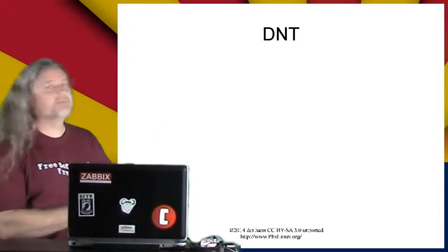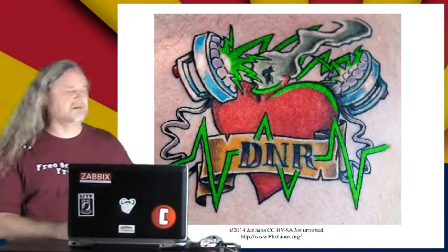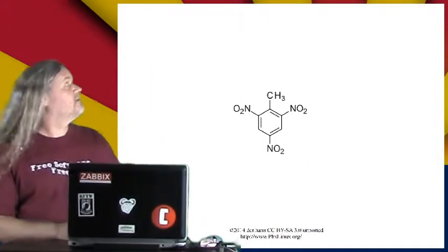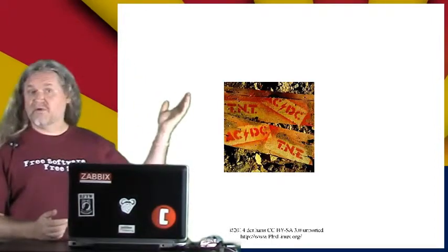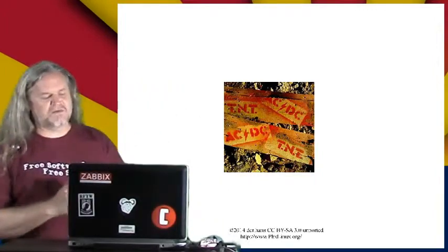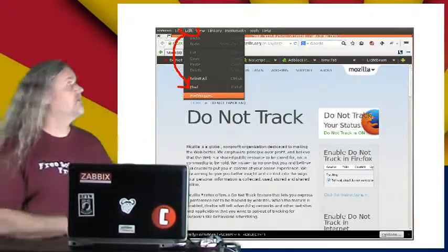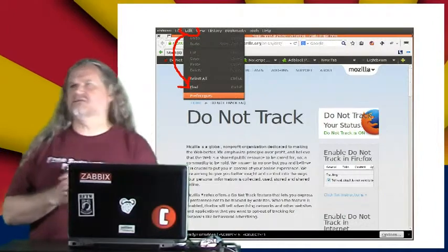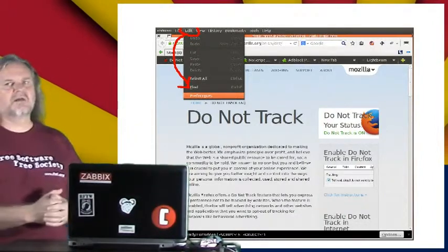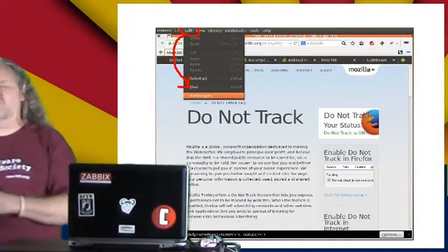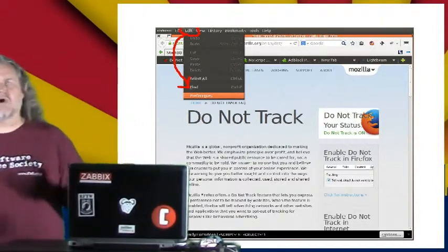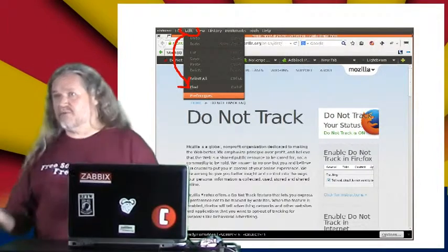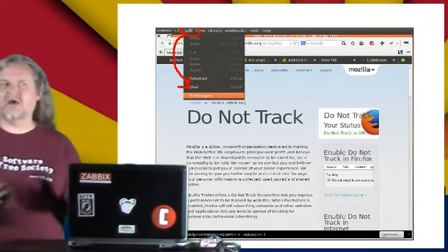We can use DNT — Do Not Track. Do Not Track is a header that your web browser can send out that says don't track me. It's like putting a no-soliciting sign on all of your web requests. Do companies have to acknowledge that? No — just like people still knock on your door despite a no-soliciting sign. However, some people do acknowledge it and do the right thing, and with public feedback we'll get more websites to do the right thing if we are sending the DNT header.